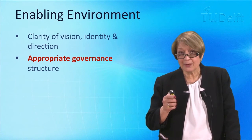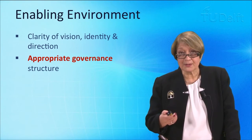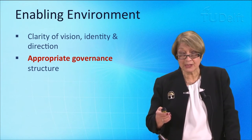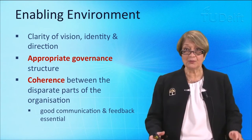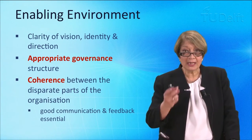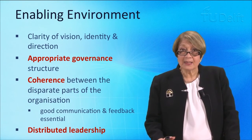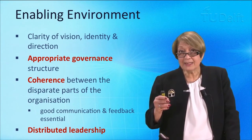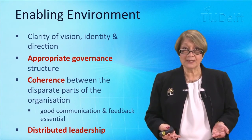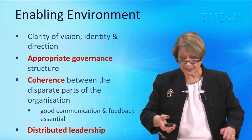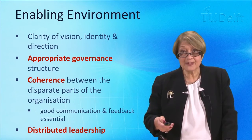It also needs the appropriate governance structure. We really do need to rethink what governance means for a complex system — it is not the same as governance in the traditional way we've been thinking about it. There also needs to be coherence between the disparate parts of the organisation, based on good communication and feedback. And what it requires is distributed leadership — the idea that leadership is not necessarily just the person at the very top. There are leaders within any organisation that emerge as new demands come up, so we need to enable and facilitate distributed leadership.